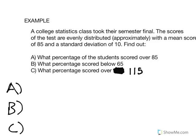Let's show you an example of a bell curve so you can see how this works when you have actual data. The example is: a college statistics class took their semester final. The scores of the test are evenly distributed, approximately, with a mean score of 85 and a standard deviation of 10. Find out what percentage of the students scored over 85, what percentage scored below 65, and what percentage scored over 115.